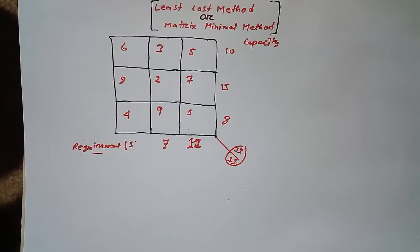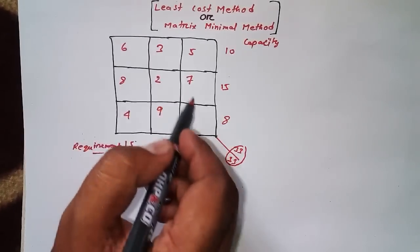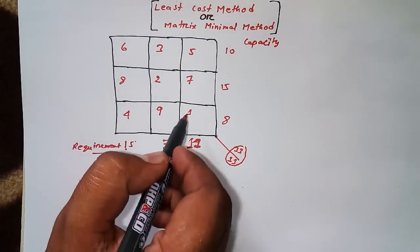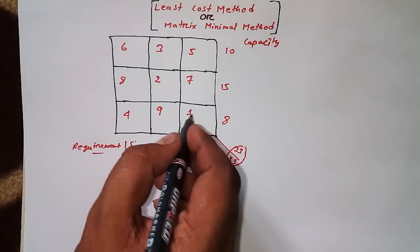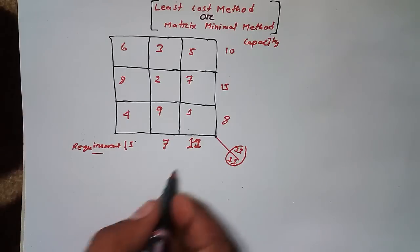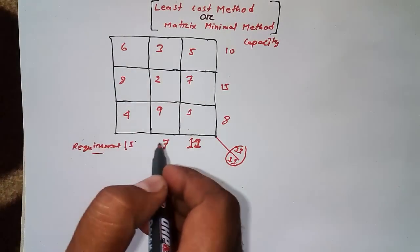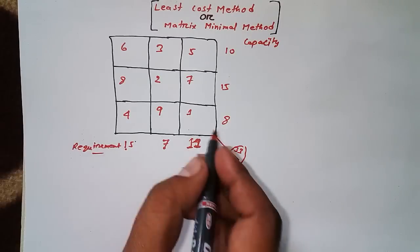According to this concept, I have to find the least cost. The maximum is 8 and the least is 1, so I have to work on this box. After finding the least cost among all numbers in the table, I have to check requirement and capacity.